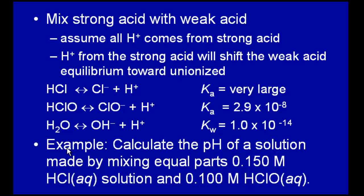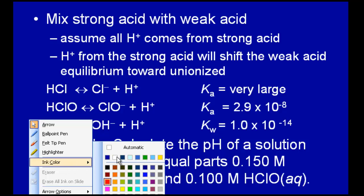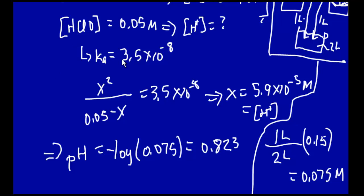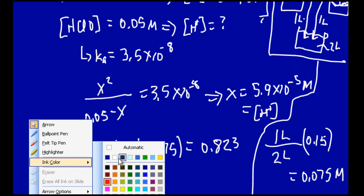Here we're going to go over some of the problems we did in last Friday's lecture. Last Friday's lecture we did some calculations based upon mixing a strong acid and weak acid, along with other things mixing acids and bases. There was some question in class about the intermediate steps, so the purpose of this is to go through those intermediate steps and show exactly where we got that.